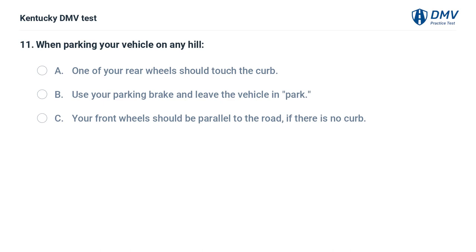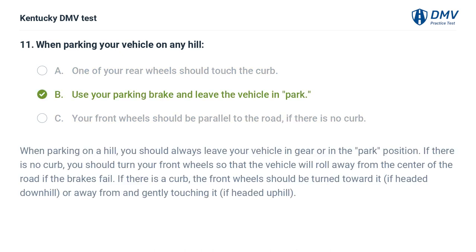When parking your vehicle on any hill: A. One of your rear wheels should touch the curb. B. Use your parking brake and leave the vehicle in park. C. Your front wheels should be parallel to the road if there is no curb. The correct answer is B, use your parking brake and leave the vehicle in park. When parking on a hill, always leave your vehicle in gear or in the park position. If there is no curb, turn your front wheels so the vehicle will roll away from the center of the road if the brakes fail. If there is a curb, the front wheels should be turned toward it if headed downhill, or away from and gently touching it if headed uphill.